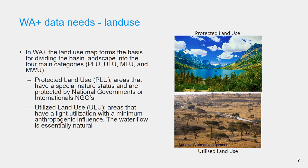Utilized land use includes areas that have light utilization with a minimum anthropogenic influence, where the water flow is essentially natural. This class represents a low to moderate resource utilization of the original vegetation where human influence is minimal, such as savannas, woodlands, natural pastures, wetlands, mountainous shrubs, riparian corridors, etc.